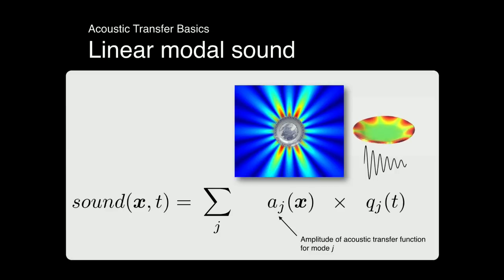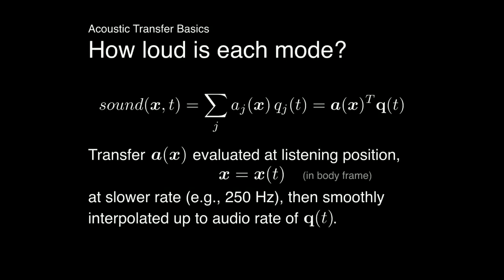The simplest thing we can do is scale the amplitude, which can account for dramatic variations in amplitude of each mode. The acoustic transfer function can be thought of as a function of space — the position of your ear, x, in the object's frame of reference — and it modulates each individual mode. We do this for each mode and add them together by linear superposition of the wave equation. In practice, you don't need to evaluate transfer functions at audio rates; you can do this at a few hundred hertz and smoothly interpolate the transfer values along the trajectory.